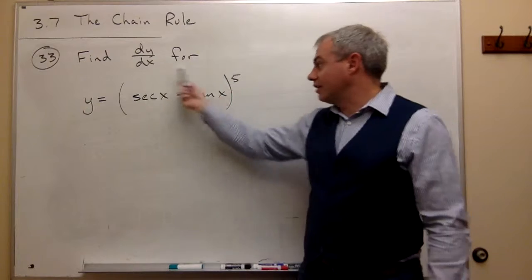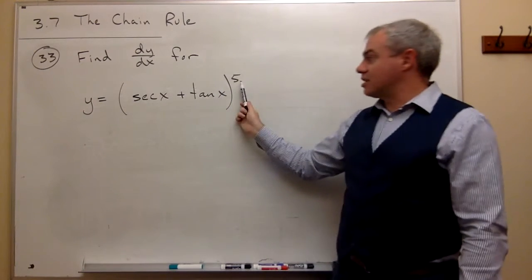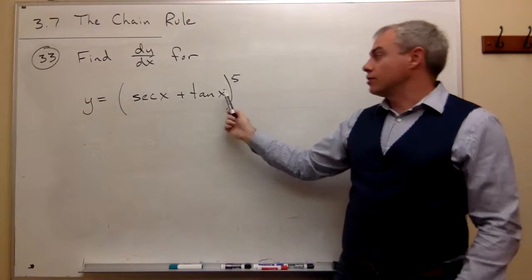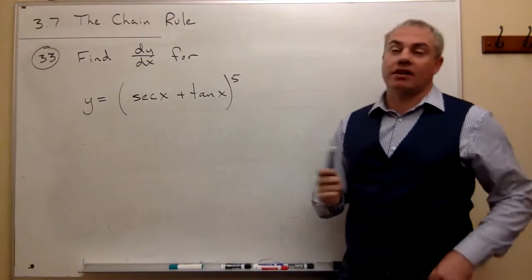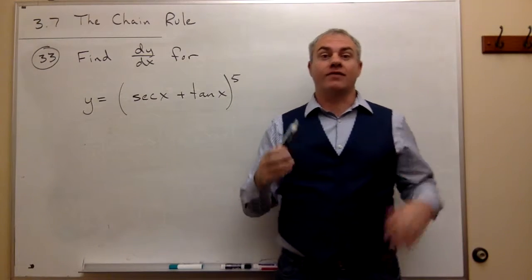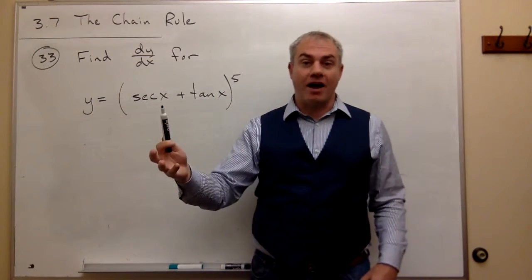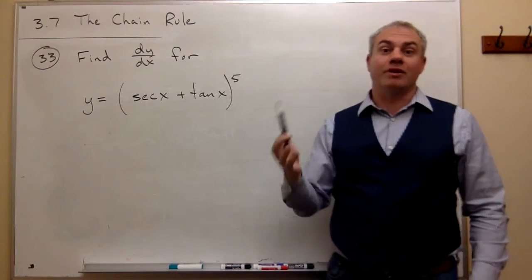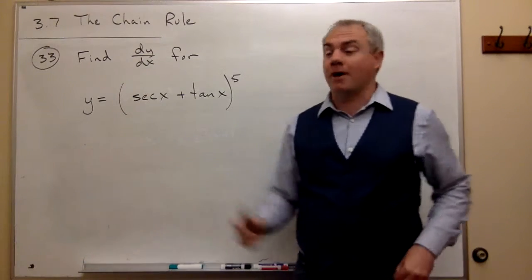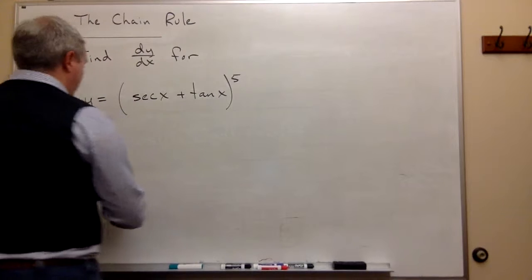So I've got something raised to the fifth power. So what's the derivative of something to the fifth power? By the power rule, it'd be five somethings to the fourth power. And that's exactly what I'm going to write down here.